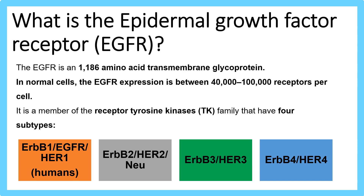EGFR is a member of the receptor tyrosine kinase family, which has four members: EGFR, also known as ERB-B1 or HER1, which is the predominant type found in humans; ERB-B2, also known as HER2 or NEU; ERB-B3, otherwise known as HER3; and ERB-B4, otherwise known as HER4.